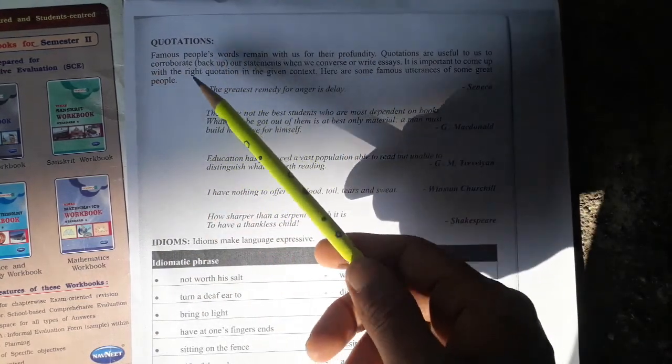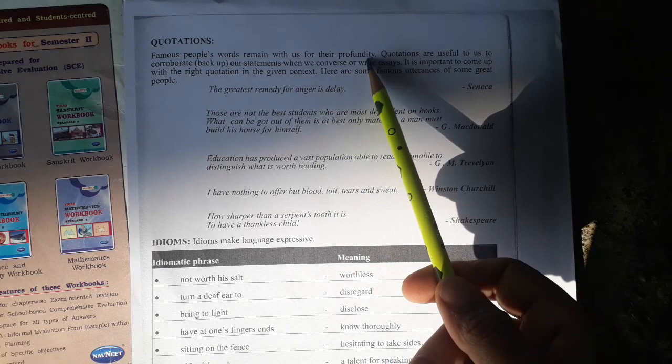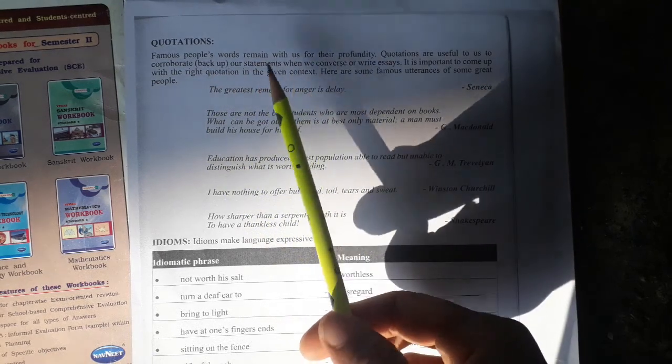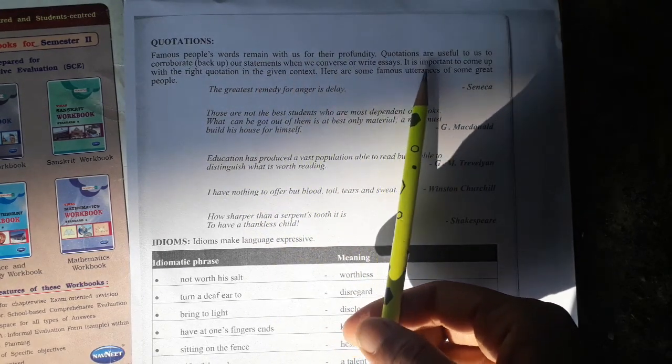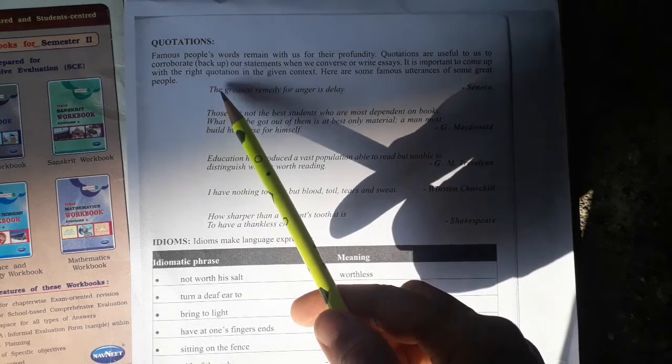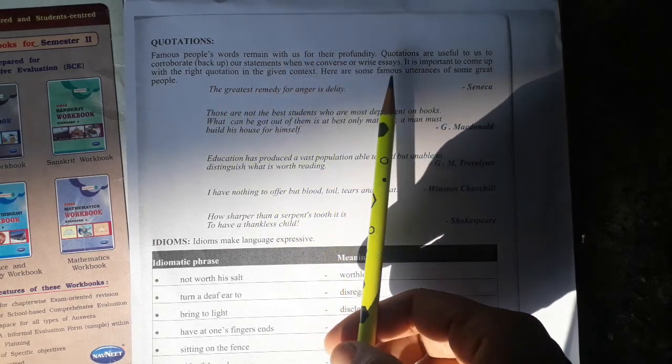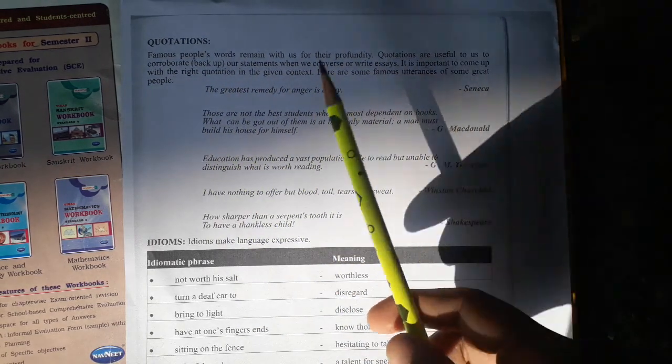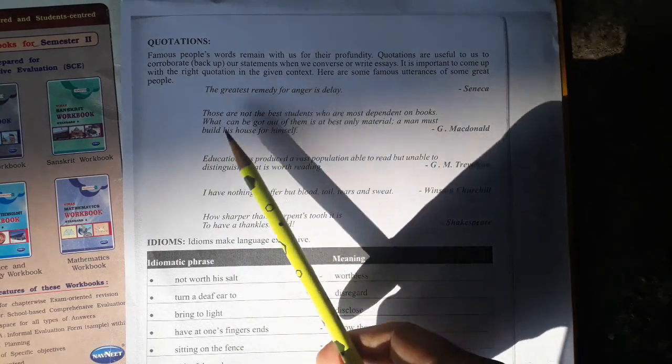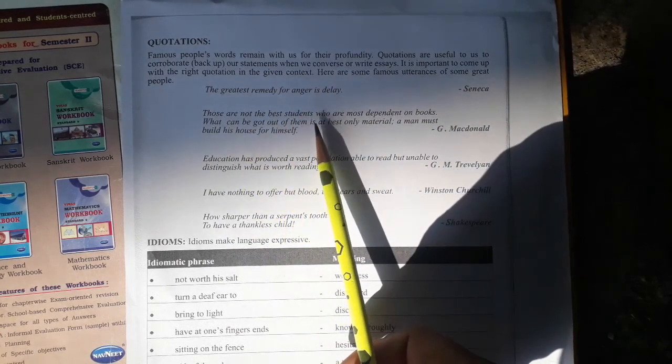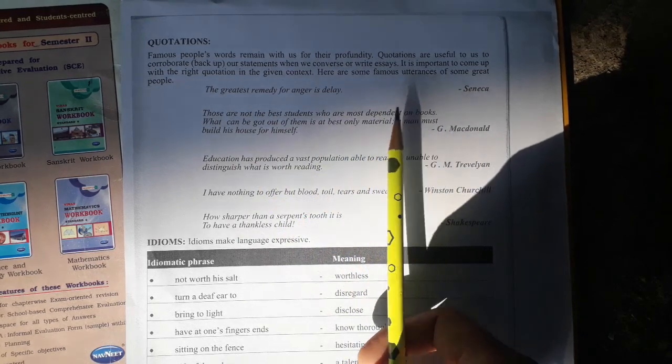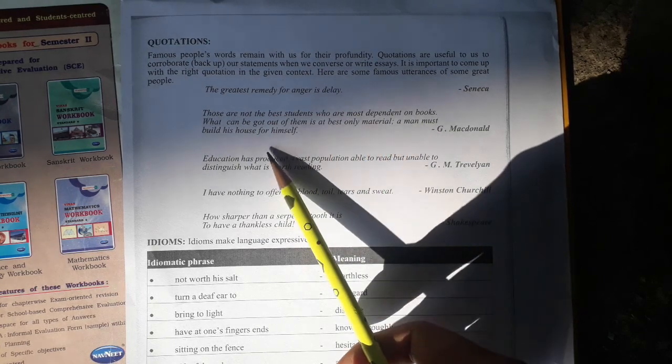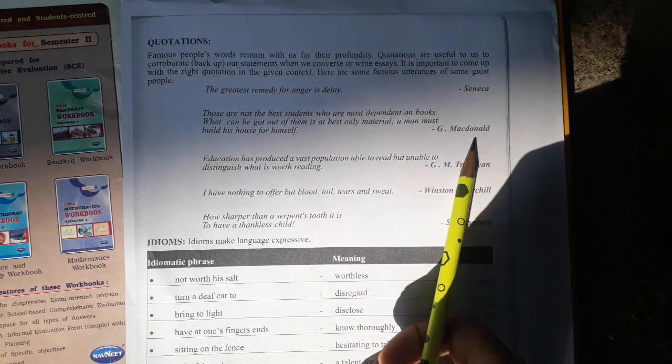Quotations: Famous people's words remain with us for their profundity. Quotations are useful to corroborate our statements when we converse or write essays. It is important to come up with the right quotation in the given context. Here are some famous utterances of some great people. Seneca: The greatest remedy for anger is delay. Those are not the best students who are most dependent on books. What can be got out of them based on the material a man must build his house of himself. G. MacDonald.